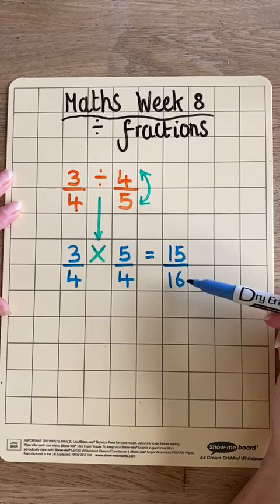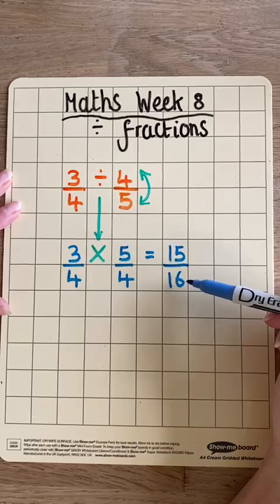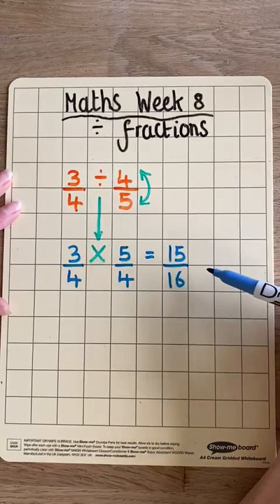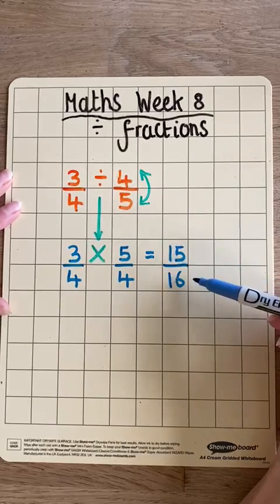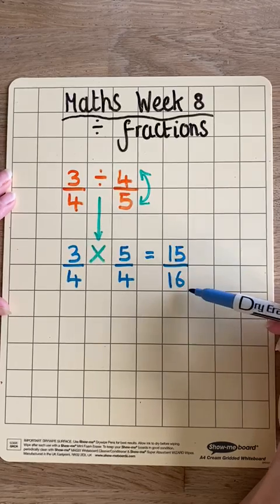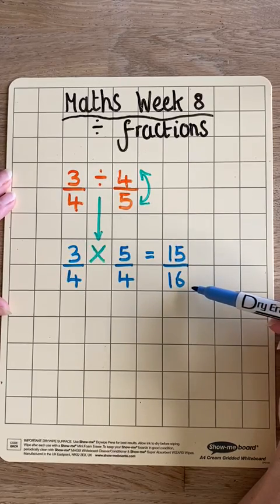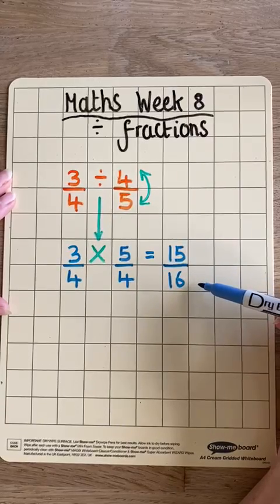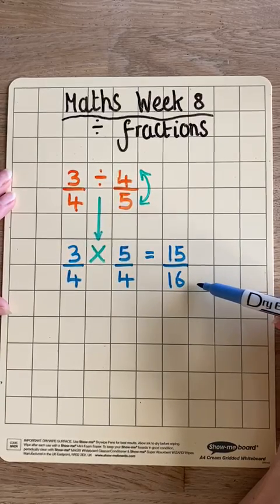The next stage would be to simplify that fraction. To do that, we would have to find one common number that we could divide 15 and 16 by. We don't have one. This fraction is in its simplest form already. So that is our final answer.